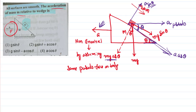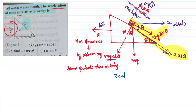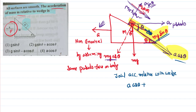The body's motion is going to be only along the inclined plane, so we consider only the forces and accelerations acting along the direction of motion. There is Mg sinθ acting down the inclined plane, and a·cosθ also acting down the inclined plane. Since both act in the same downward direction along the incline, they are added together. The total acceleration of the small block relative to the wedge is therefore g sinθ + a cosθ.